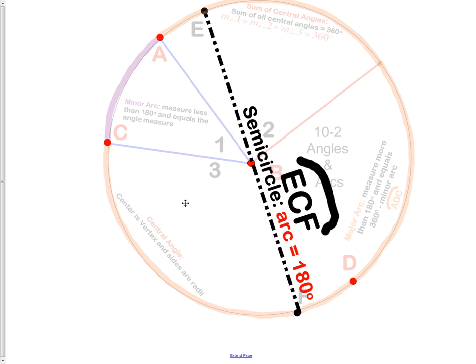Next, we have a semicircle, which equals 180. It is simply an arc which covers half a circle. We use three letters when we name semicircles. So we have E, C, F, which is our semicircle, which equals 180 degrees.